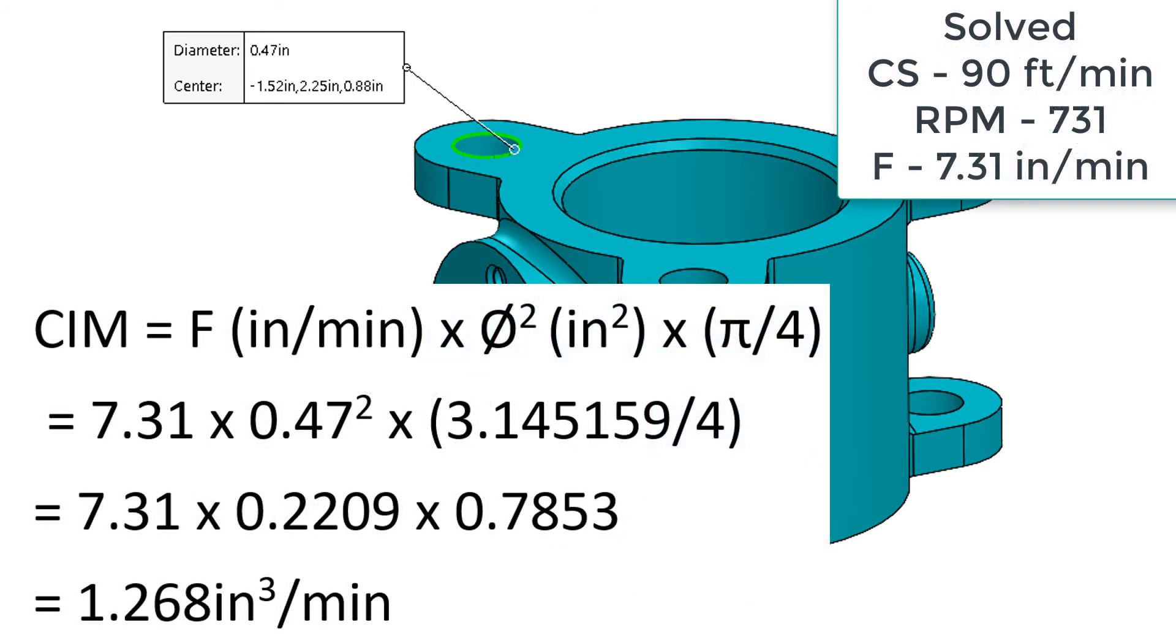Now we can solve for the cubic inches per minute. We can multiply 7.31 times 0.47 squared times pi divided by 4 which gives us 1.268 cubic inches per minute of material removal.